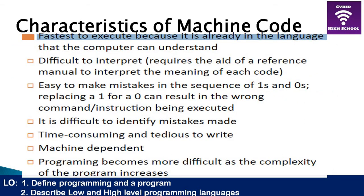Machine language programs are the only language computers understand, so they do not need to be translated — making them extremely fast. They are the fastest programs because they don't need translation. However, correcting and writing them is quite a tedious process: it takes so much time and the chances of making mistakes are very high. They are also machine dependent — made only for that particular hardware.